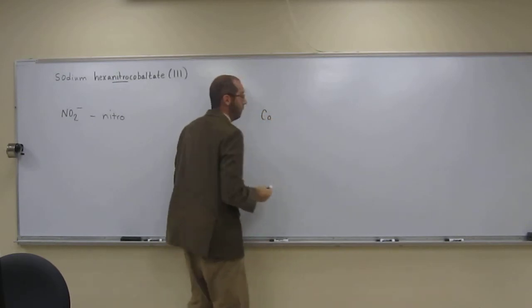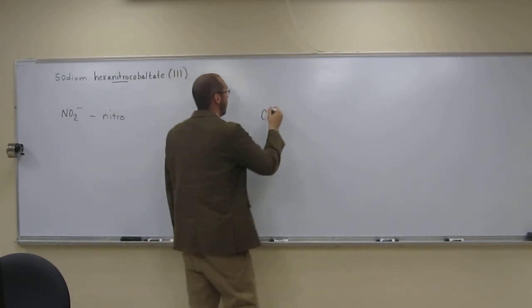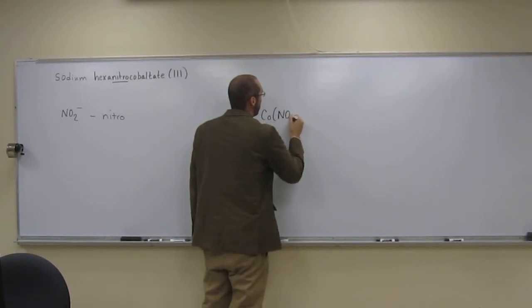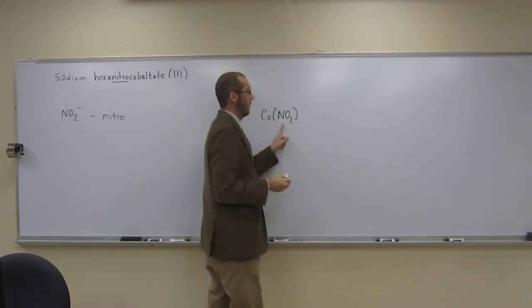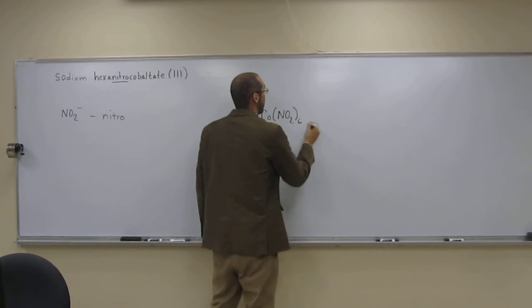So we've got a cobalt atom, and around that cobalt atom, we've got NO2 minuses, right? And we've got six of them, like that.